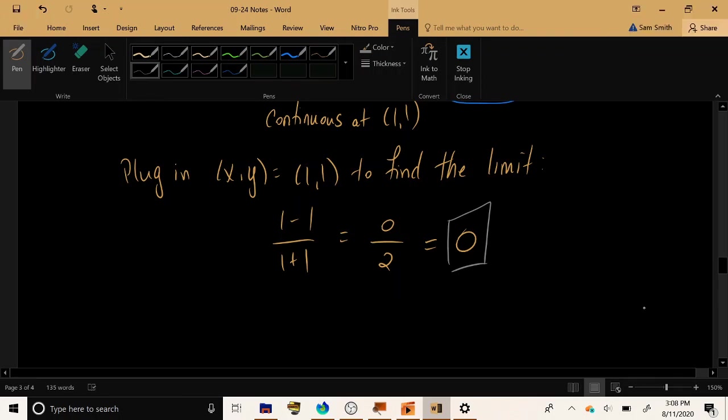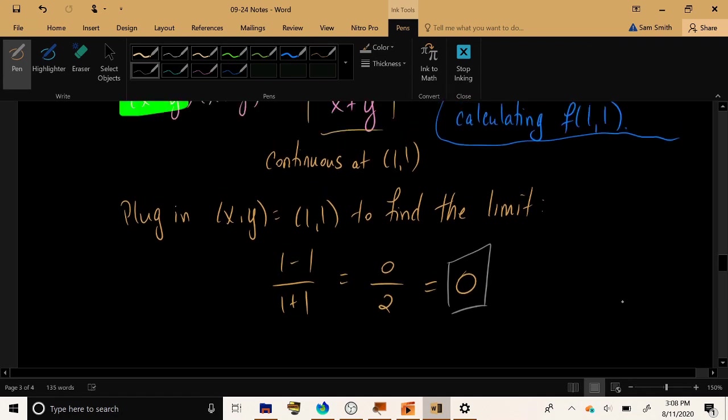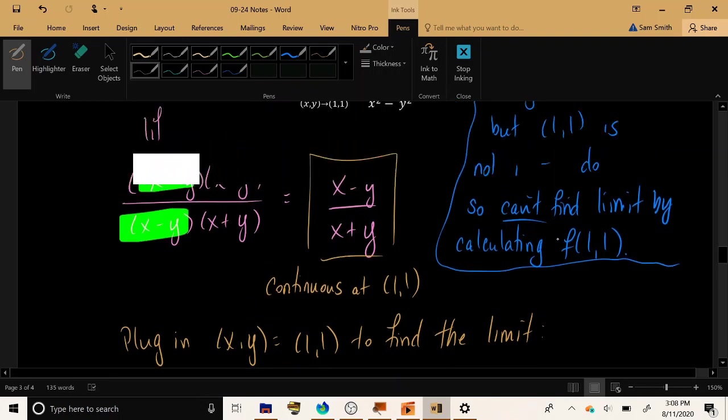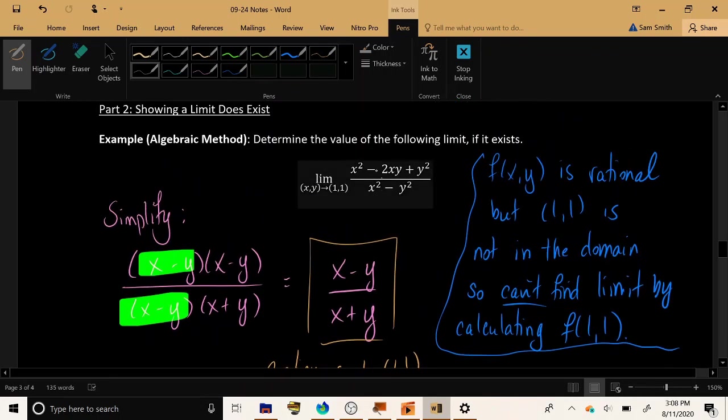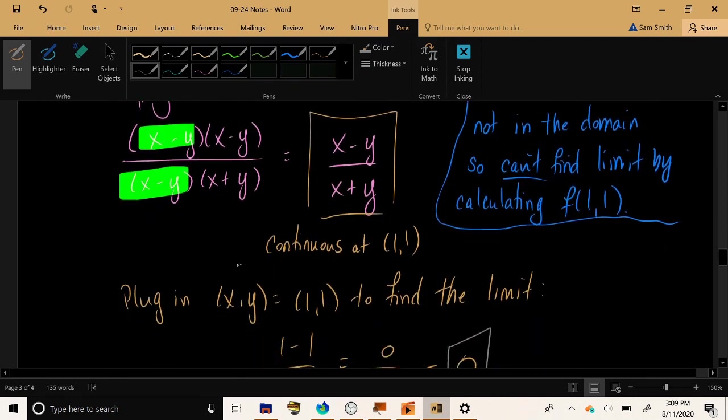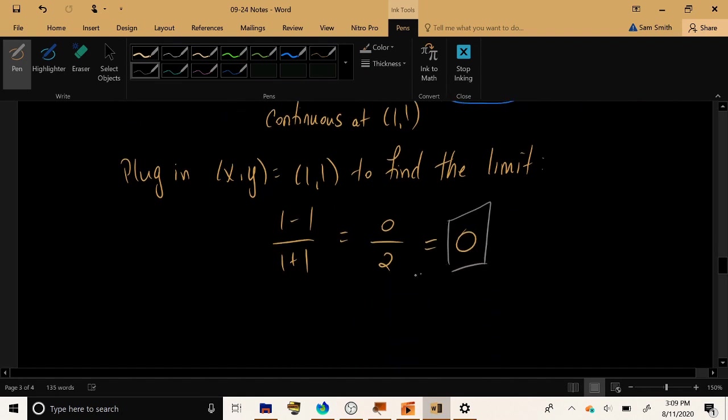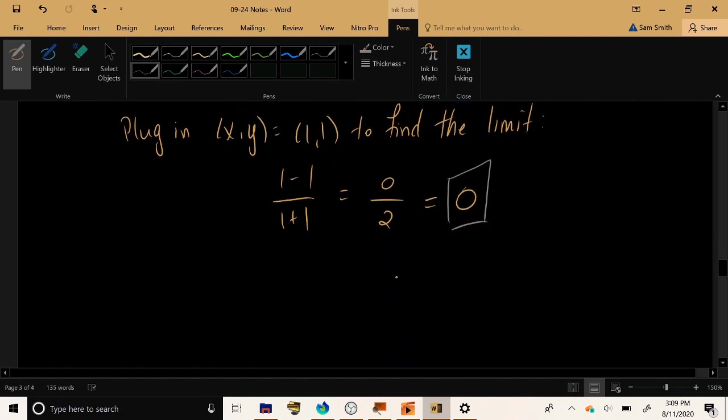So, in this situation, we were able to calculate the value of the limit, which automatically shows that the limit does exist. In this special case, we were able to factor the numerator and denominator of our rational fraction. We were able to cancel out some problematic factors, which left us with a new function where we could just plug in the point 1 comma 1 that we were given and get a defined answer. So that is one technique that can sometimes, if you're lucky, be used to find limits and to show that they actually exist.